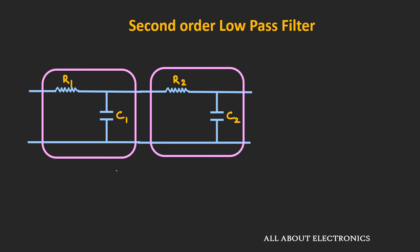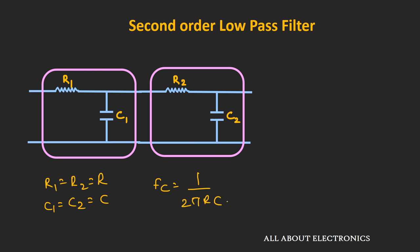When cascading two first order low pass filters to design a second order filter, the cutoff frequency of the second order filter will not be the same as that of the first order filter. For example, if R1=R2=R and C1=C2=C, the cutoff frequency fc equals 1/(2πRC). However, the cutoff frequency of the second order filter will actually be somewhat shifted from the expected value.